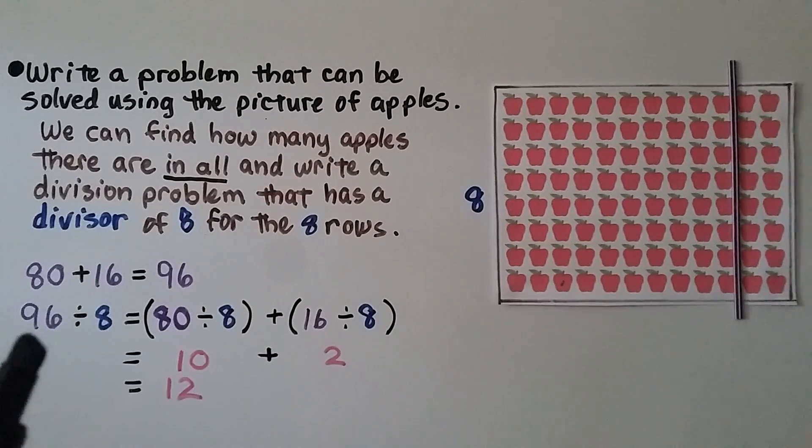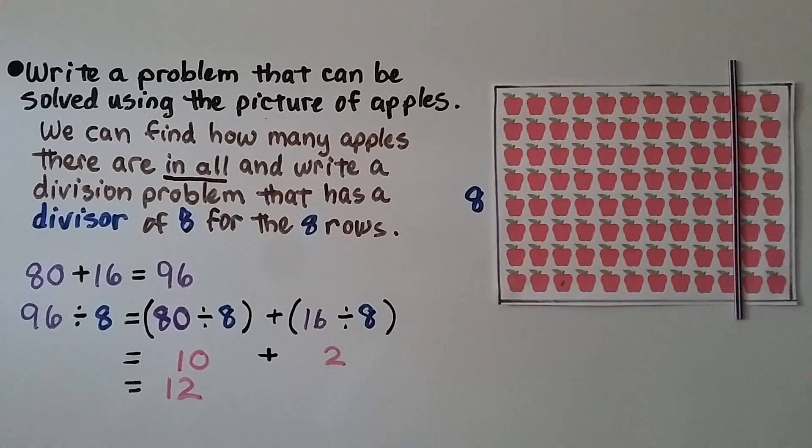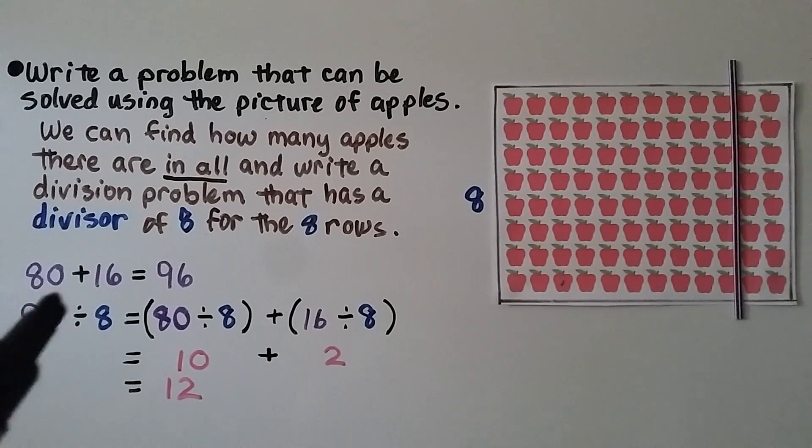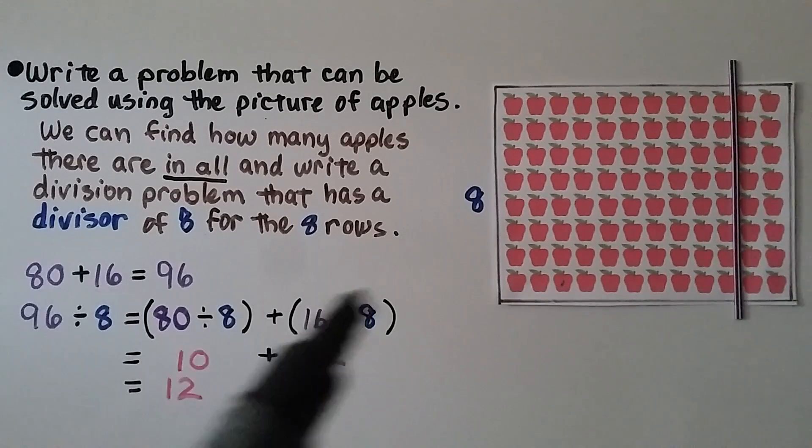Because we have 8 rows, we can write 96 divided by 8. We already have our 2 addends that are compatible with 8.